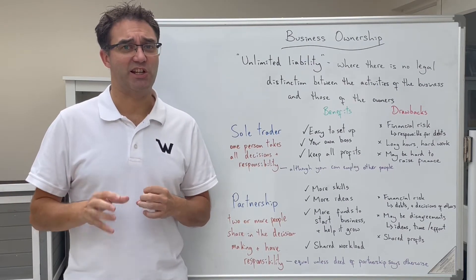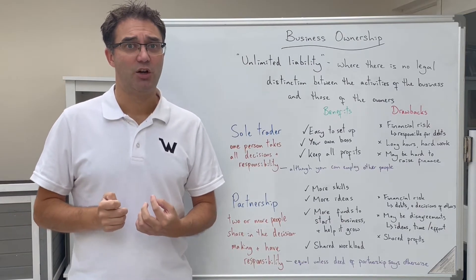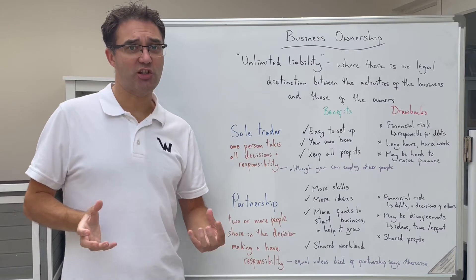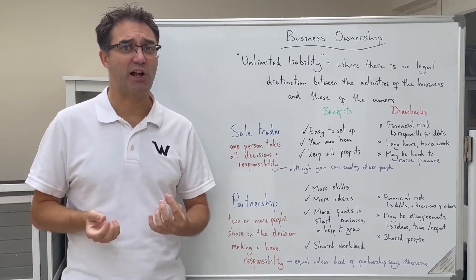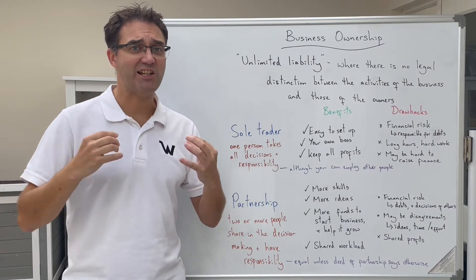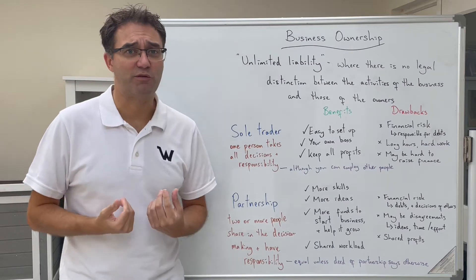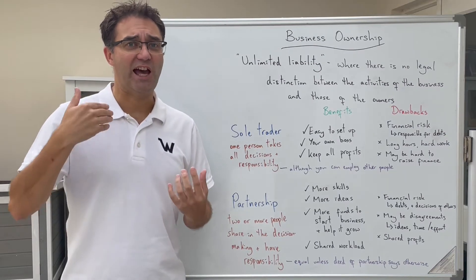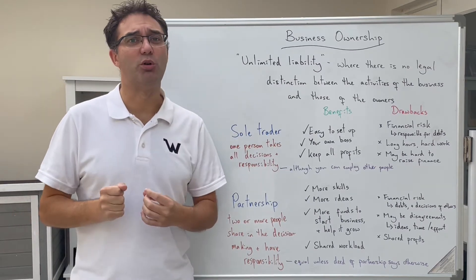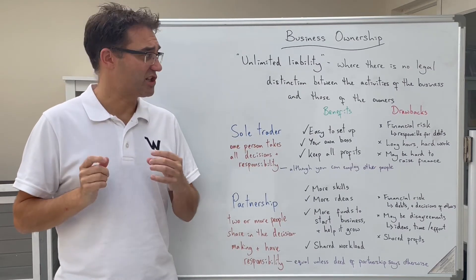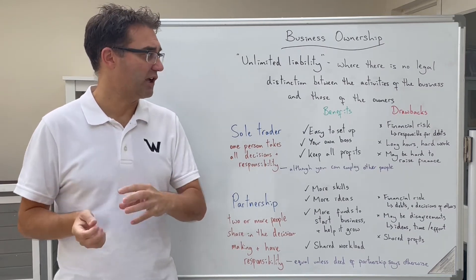One of the big downsides of being a sole trader is that they have unlimited liability. What that means is that the actions of the business are seen as being one and the same as the actions of the person running it. Therefore, if debts are run up in the name of the business, the owner — the entrepreneur — has to pay for those. So it can mean there is a lot more financial risk to sole traders than if we have limited liability, which we'll look at in a moment.